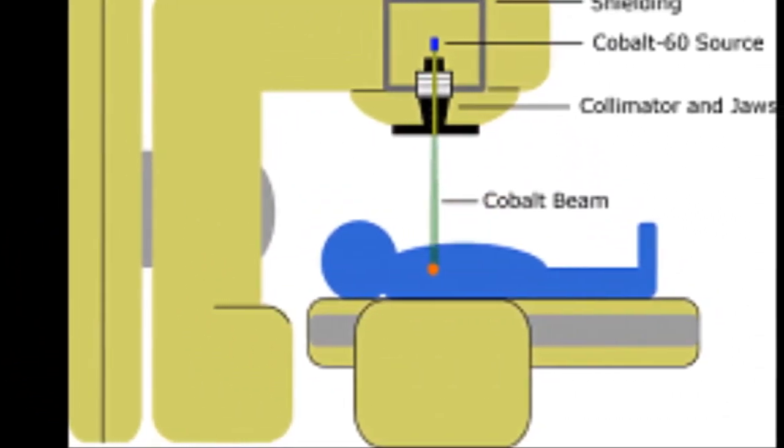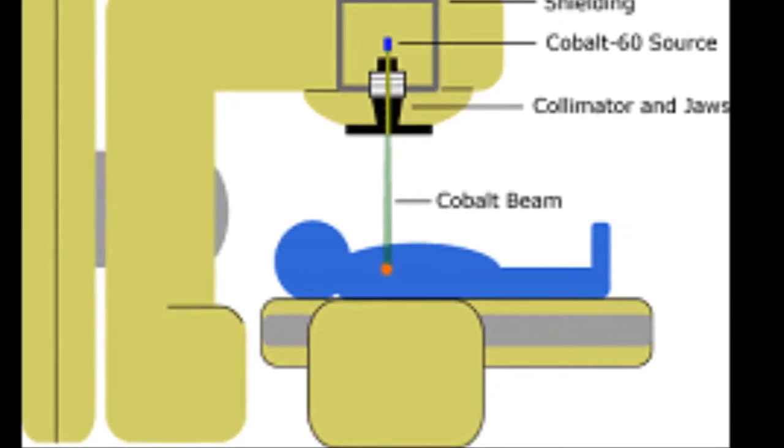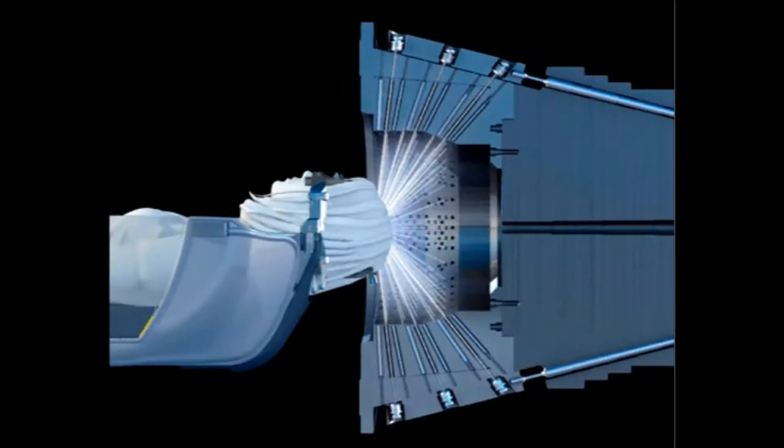Cobalt-60 therapy units contain a small cylinder of cobalt-60 in the treatment head of the device. As the patient lies on the table, a beam of gamma rays passes through a series of collimators and jaws, which shape the beam as it is directed at the patient.